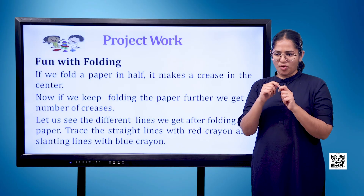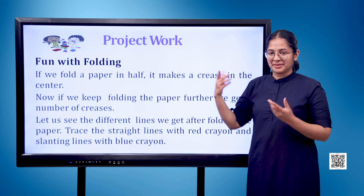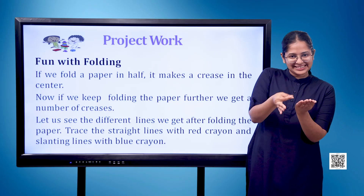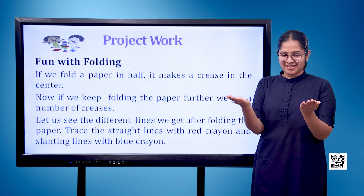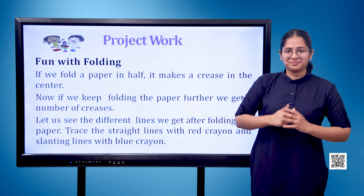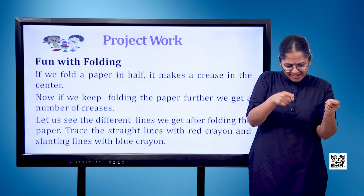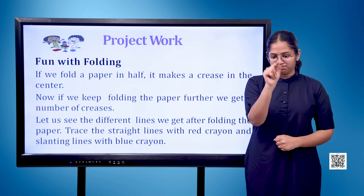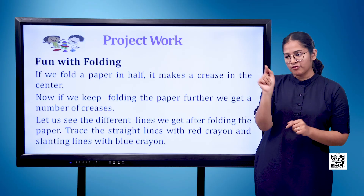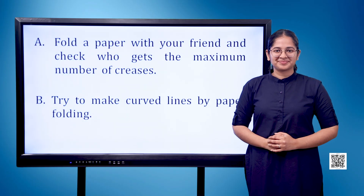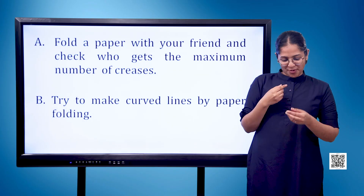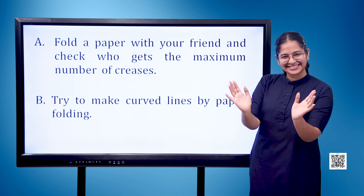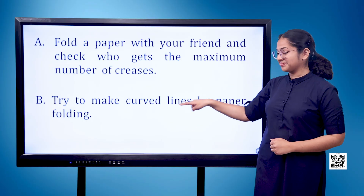Project work: Fun with folding. If we fold the paper in half, it makes a crease in the centre. Now if we keep folding the paper further, we get a number of creases. Let us see the different lines we get after folding the paper. Trace the straight lines with a red crayon and slanting lines with a blue crayon. A. Fold a paper with your friend and check who gets the maximum number of creases. B. Try to make curved lines by paper folding.